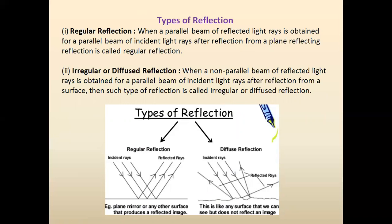There are two types of reflection: one is regular reflection and the other is irregular or diffused reflection. In regular reflection, the incident rays are parallel and the reflected rays are also parallel. When a parallel beam of reflected rays is obtained for a parallel beam of incident rays after reflection from a plane surface, this is called regular reflection. In case of irregular reflection, the incident rays are parallel but the reflected rays are not parallel. This type of reflection is called irregular reflection.